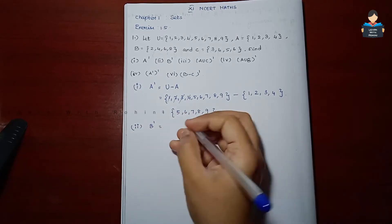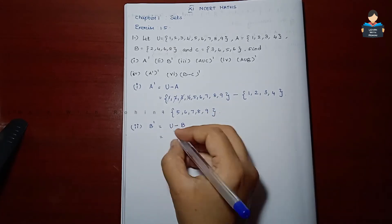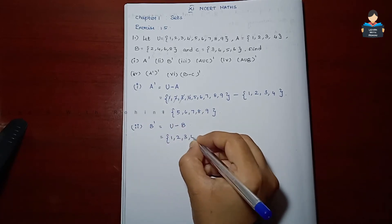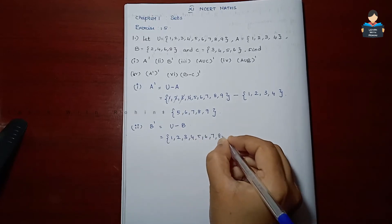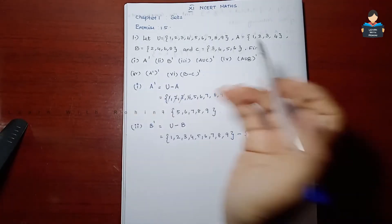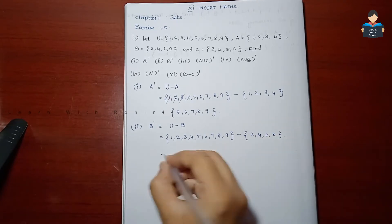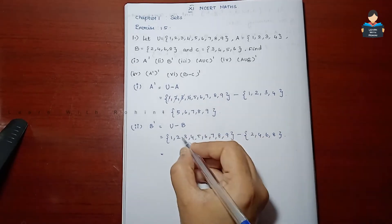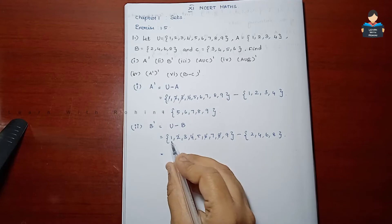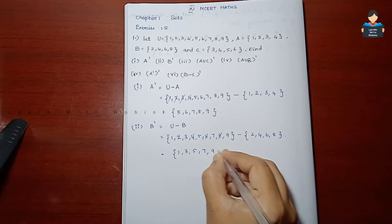Now the 2nd subdivision — B complement is asked, which is Universal set minus B. Universal set has elements 1, 2, 3, 4, 5, 6, 7, 8, and 9. Minus set B has elements 2, 4, 6, 8. We strike out those elements from U. Remaining elements are 1, 3, 5, 7, and 9. So B complement is {1, 3, 5, 7, 9}.